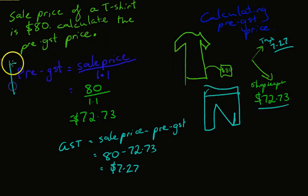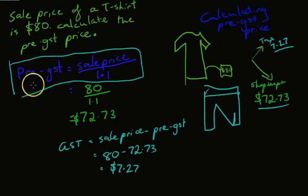Okay, so that's this formula. Super, super important. The pre-GST price is equal to the sale price divided by 1.1.